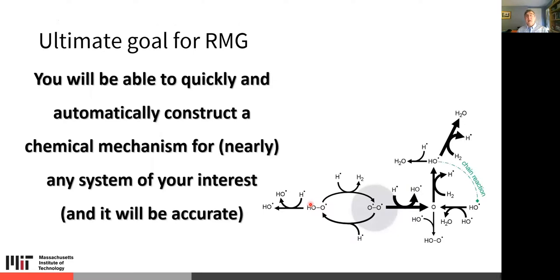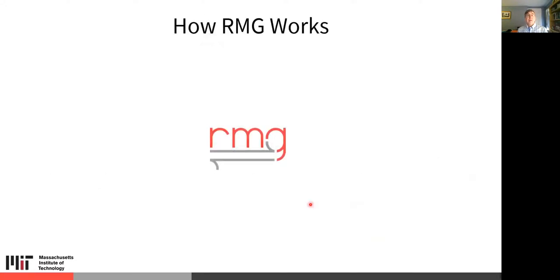The ultimate goal is that anyone would be able to quickly and automatically construct a chemical mechanism for whatever system they're interested in, and that the mechanism will be accurate — meaning it includes all the important reactions and species and has reasonable estimates for all the parameters, so you can use it to predict the chemical evolution with time. This is a very challenging goal, and we'll show you how far we are and teach you how to use the tools we have so far.